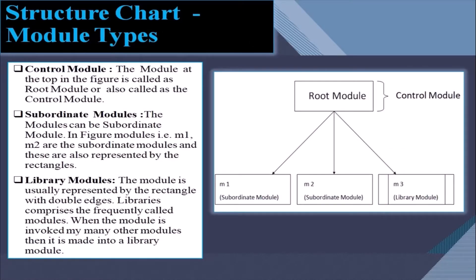There are different types of modules. The first is a control module — the module at the top is called the root module or control module. Subordinate modules are those below it; for example, modules M1 and M2 are subordinate modules, also represented by rectangles. Library modules are represented by a rectangle with double edges. Libraries comprise frequently called modules; when a module is invoked by many other modules, it is made into a library module.